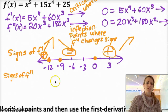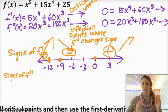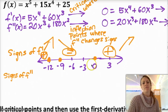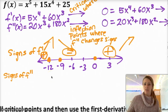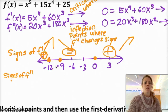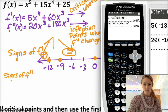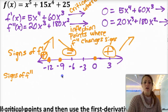Remember, negative 9 and 0 were the places where the second derivative was 0, so those could be inflection points. I want to check the signs of f double prime to the left of negative 9, then between negative 9 and 0, and then after 0. Before negative 9, I'll choose negative 10. If I plug in negative 10 into the second derivative, I get negative 2,000. The number doesn't matter — all that matters is the sign. The double prime is negative to the left of negative 9.